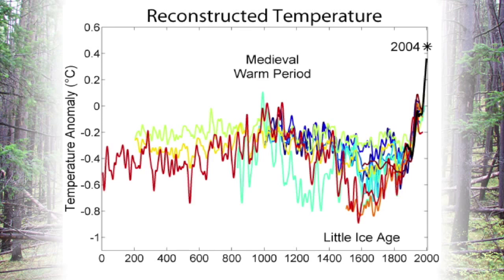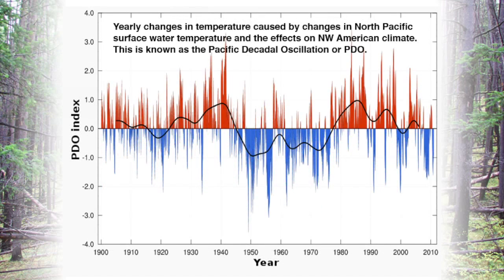To further show the tremendous variability in climate and weather, this graph covers only the last 100 years of the dominant climatic influence on the northwestern United States — known as the Pacific Decadal Oscillation. These are the temperature and weather patterns that come off of the north Pacific and influence how much rainfall we get and what temperatures are like.